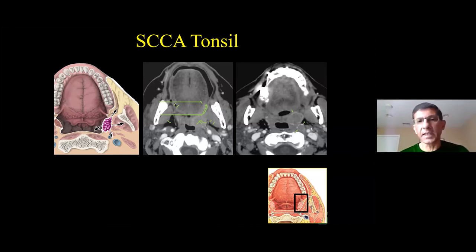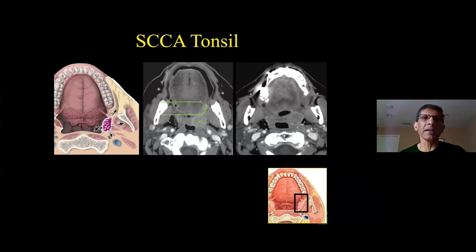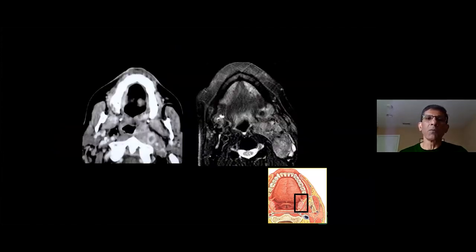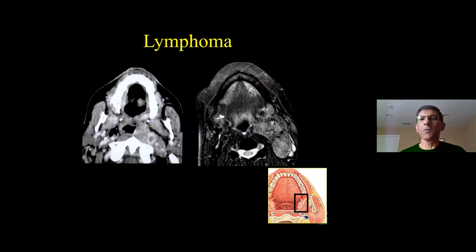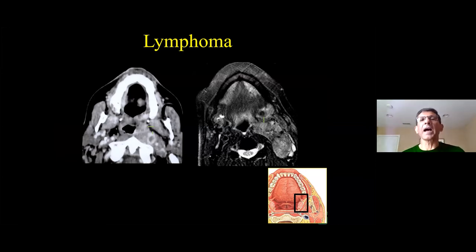The bottom line: if you see a mass involving the tonsil, the number one diagnosis is squamous cell carcinoma. Number two is lymphoma — and unfortunately there is no way to differentiate lymphoma from squamous cell carcinoma on imaging; they look exactly alike. Statistically it's squamous cell carcinoma, but the second most likely diagnosis is lymphoma. Another example: here's a very large mass involving the tonsil with a retropharyngeal lymph node — again, second most likely is lymphoma.